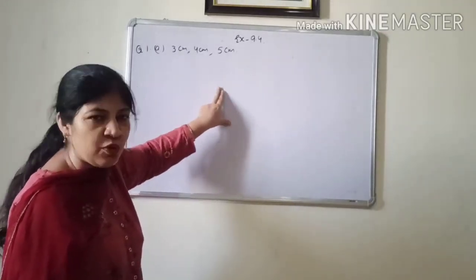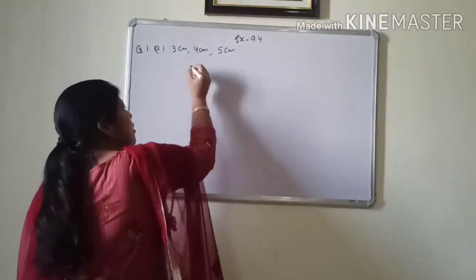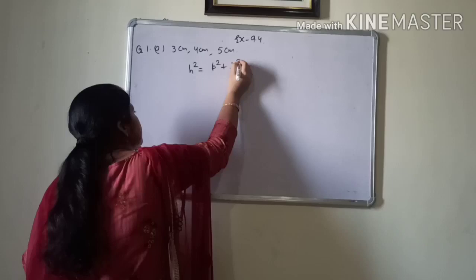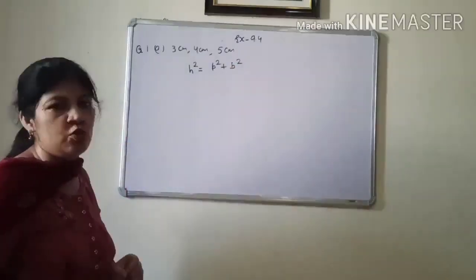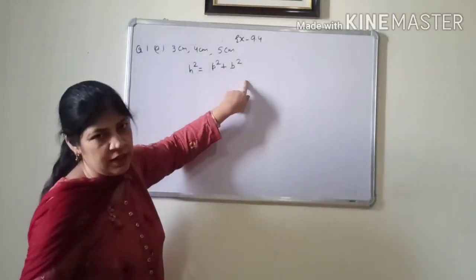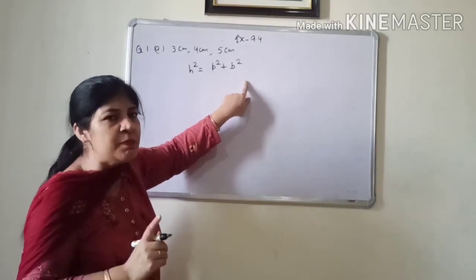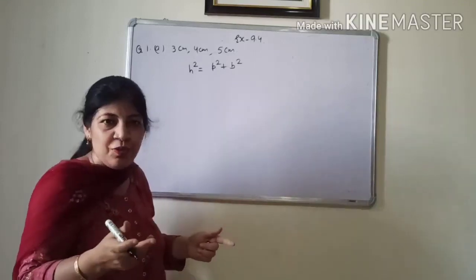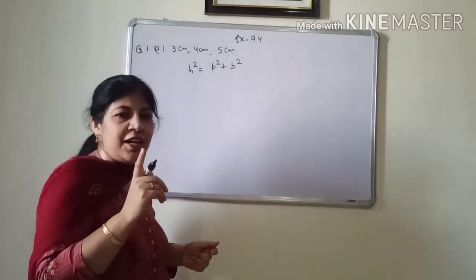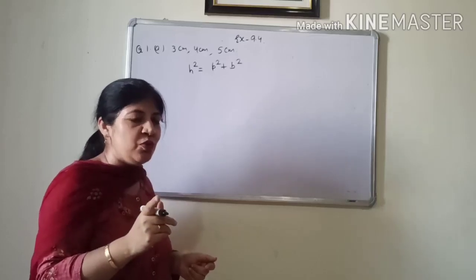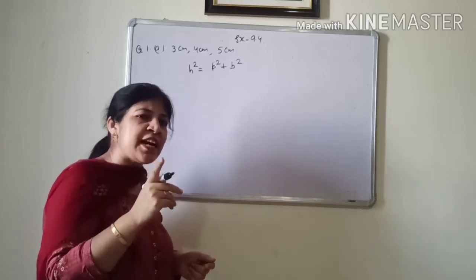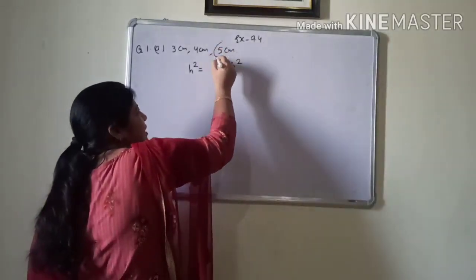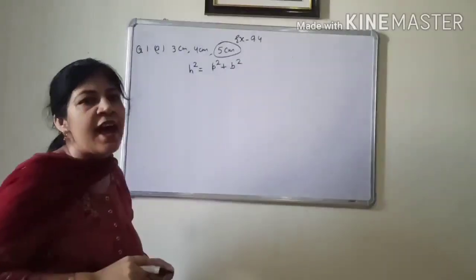And according to that theorem, you know very well, the square of hypotenuse is equal to sum of square of other two sides. Now, you must be thinking which is hypotenuse, which is base. But in previous module, I have told you, the greatest side is always hypotenuse. So we will consider the greatest side as hypotenuse.